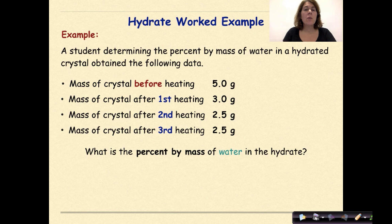Here's a different type of setup for a hydrate problem. A student determining the percent by mass of water in a hydrated crystal obtained the following data. The mass of the crystal before heating, 5 grams. Mass of the crystal after the first heating went down to 3 grams. After the second heating was 2.5 grams. And then a third heating was done, and that was also 2.5 grams.